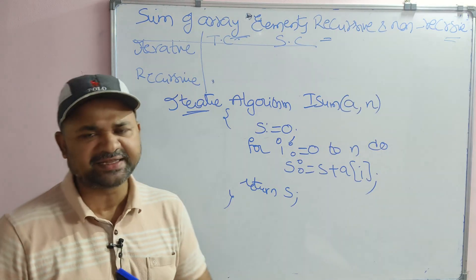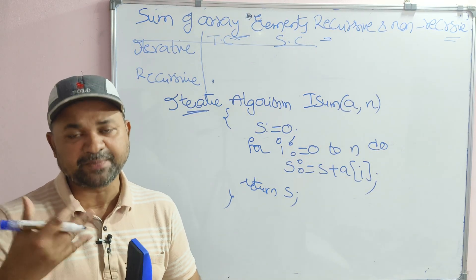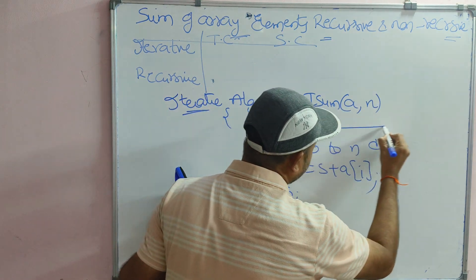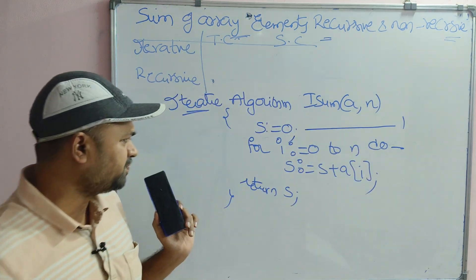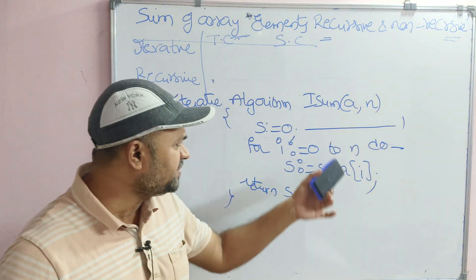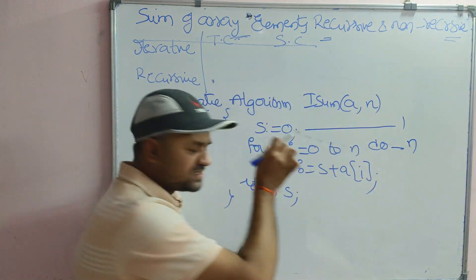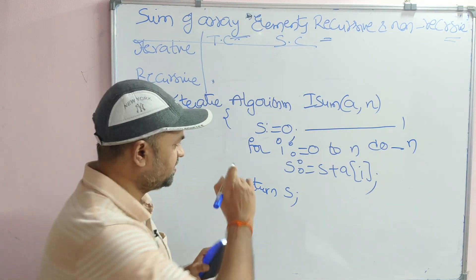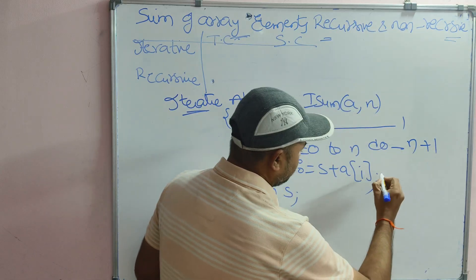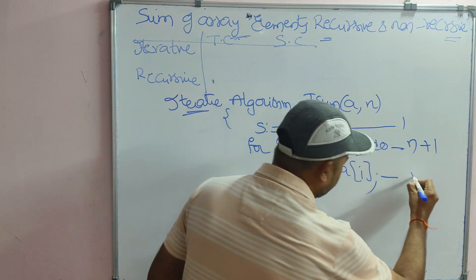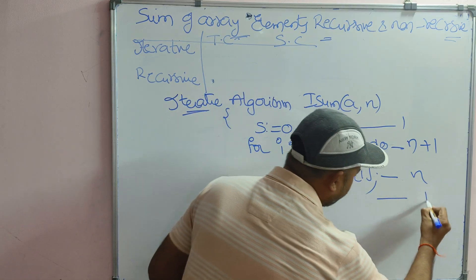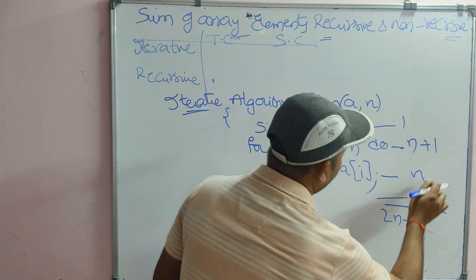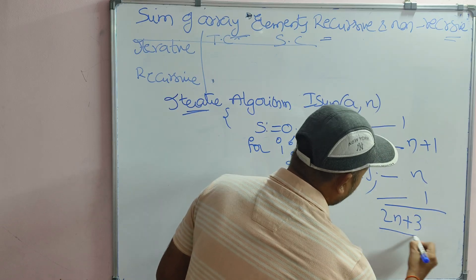First, let us calculate the time complexity using the frequency step count approach. The statement s equals 0 has a step count of 1. For the for loop, the body will be executed N times, and the false condition will be checked 1 extra time, so the step count is N plus 1. The body executes N times, and the return statement executes 1 time. Adding all values: 2N plus 1 plus 1 plus 1 gives us 2N plus 3.